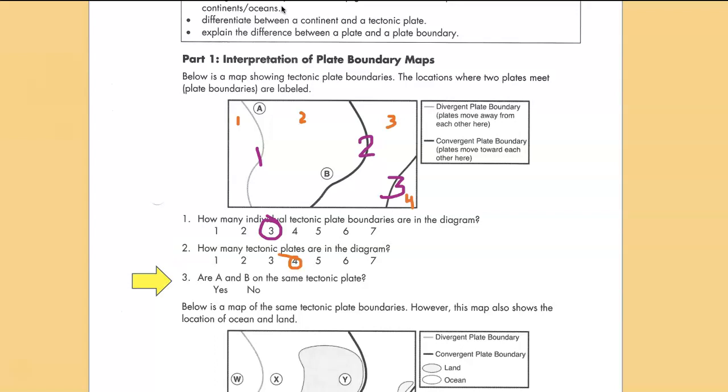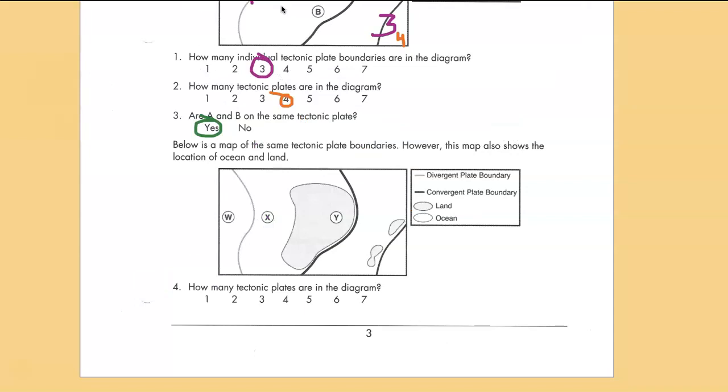Are A and B on the same tectonic plate? Yes they are, they're on plate number two. Now below there's a map where they've added some land. How many tectonic plates are in the diagram? Well we still have those same four plates, so it's still four.